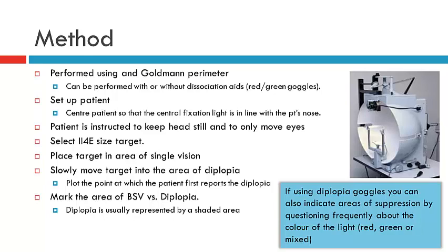We must instruct the patient that they need to keep their head still during this examination and follow the light or the target that we produce. Whilst the patient is following the target, what you're trying to gain is information about whether they see one light or two lights. It's usually easier to start off from a position where you see one light and then move towards when the patient has two lights. In some instances this might be very difficult, in which case you might go from two to one. As you progress, you'll mark the areas of BSV versus those of diplopia.